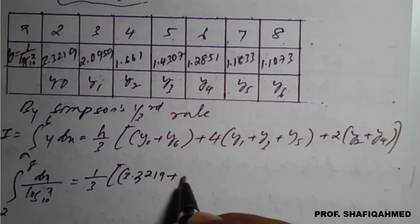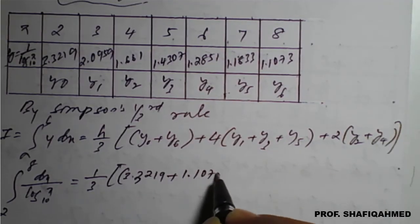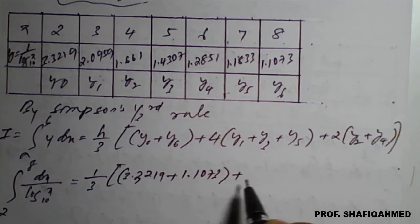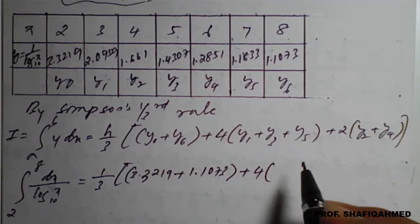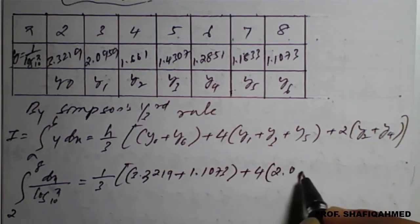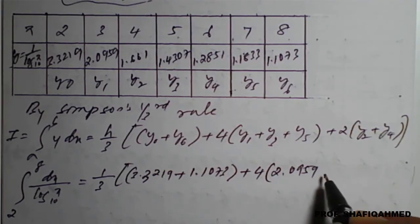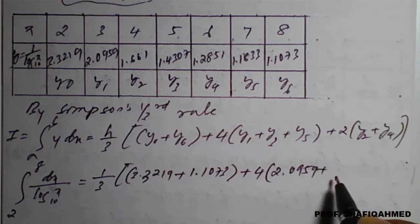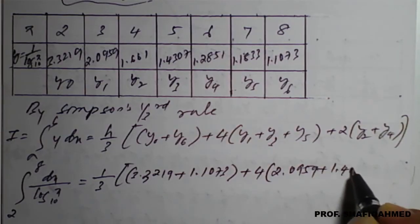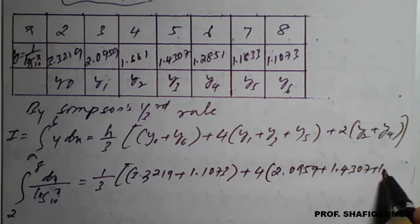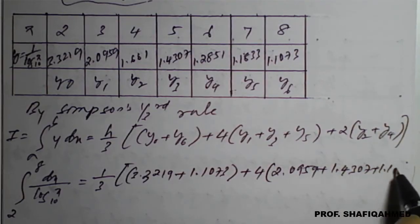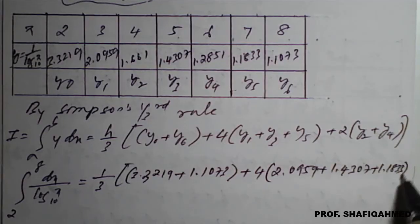y0 value is 3.3219 plus y6 value is 1.1073, plus 4 times y1 value from the table, which is 2.0959, plus y3 value is 1.4307, plus y5 value is 1.1833, close the bracket, plus